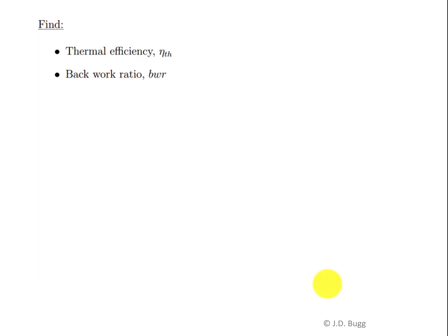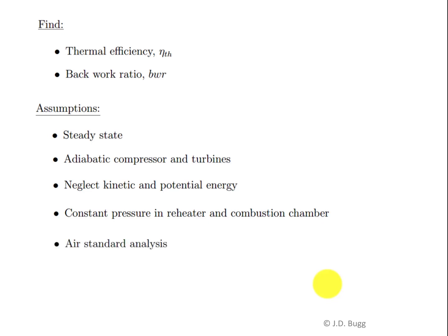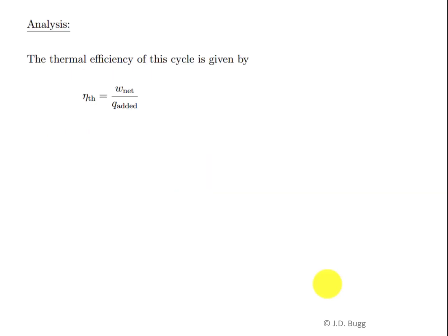We are asked to find the thermal efficiency and the back work ratio. Assumptions: steady state operation, adiabatic compressor and turbines, negligible kinetic and potential energy, constant pressure in the reheater and combustion chamber. We use an air standard analysis, meaning air is the working fluid throughout and is treated as an ideal gas. The thermal efficiency is defined as net work divided by heat added, which is true for any power cycle.